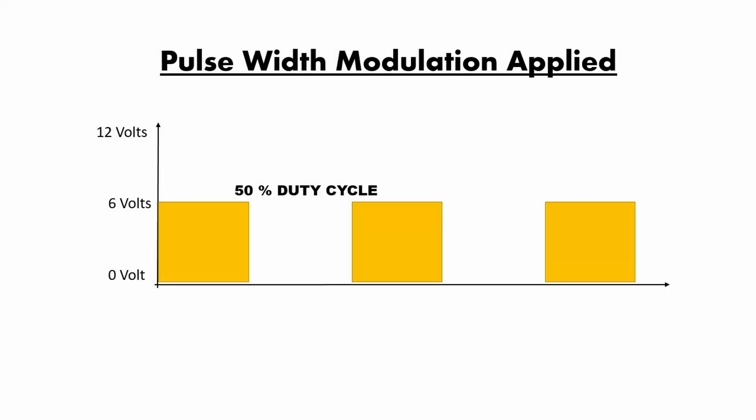In our third graph, we can see that we apply 6 volts to our circuit. We apply pulses that are half the time open and half the time closed, so we apply 6 or 0 volts to our circuit. If we calculate the average, we have a 50% duty cycle, meaning the current flowing through our circuit is 50% of our maximum current.